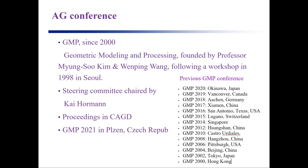The second conference of AG is GMP, since 2000. GMP — the full name is Geometric Modeling and Processing — was founded by Professor Myung-Soo Kim and Wenping Wang, following a workshop in 1998 in Seoul. Wenping knows more details. The steering committee is currently chaired by Kai Hormann. The proceedings of the conference are a special issue in the CAD journal. GMP 2021, this year, is in Plzeň, Czech Republic. Unfortunately, it's also an online conference.